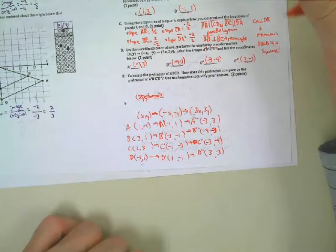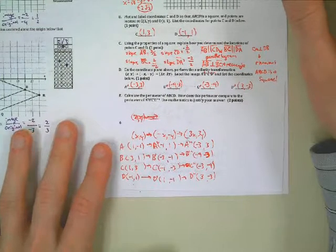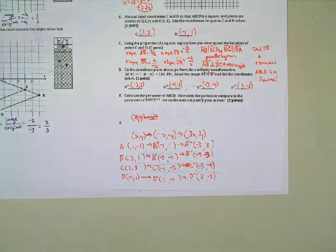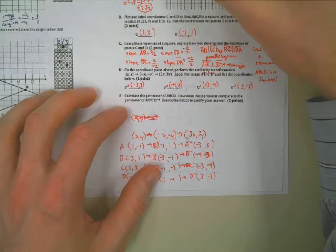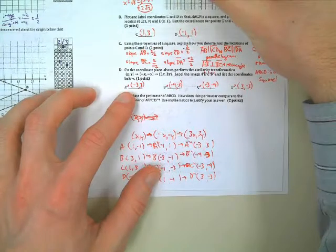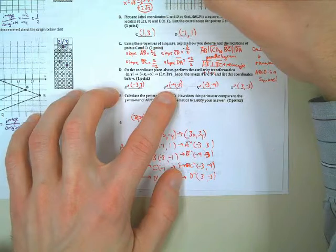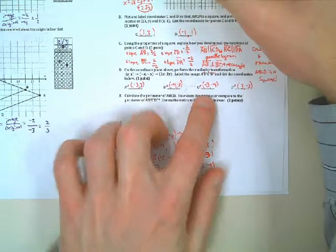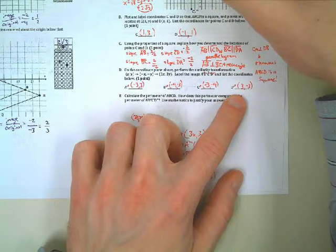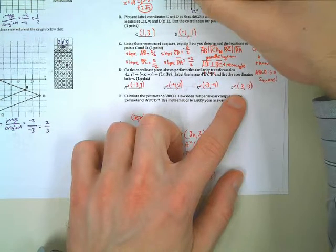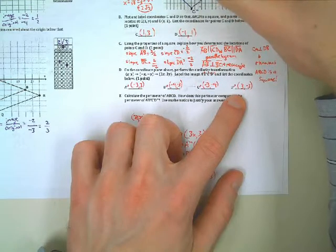It did say to perform the similarity transformation, so I'll plot these points in a different color. A'' at (-3,3), B'' at (-9,-3), C'' at (-3,-9), and D'' at (3,-3). There's the new square — the similar square.